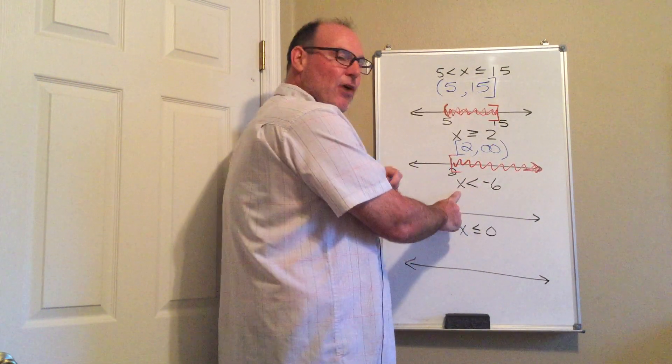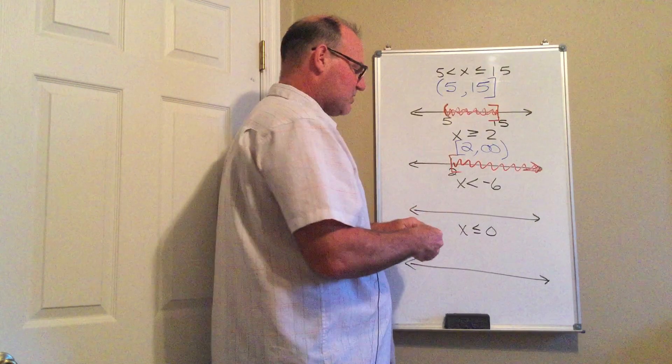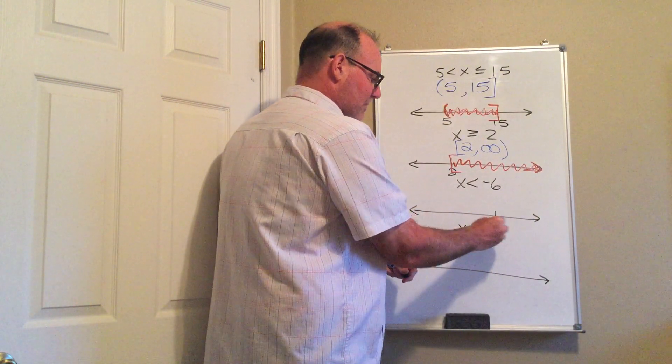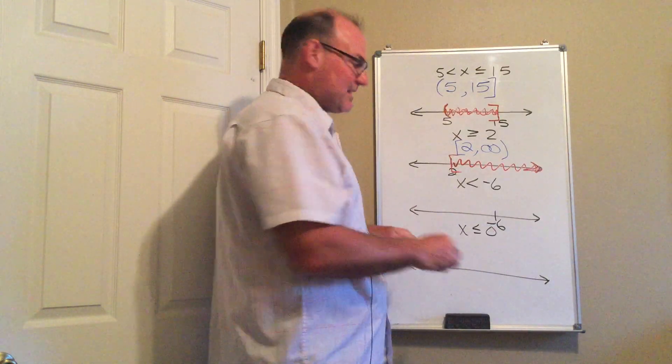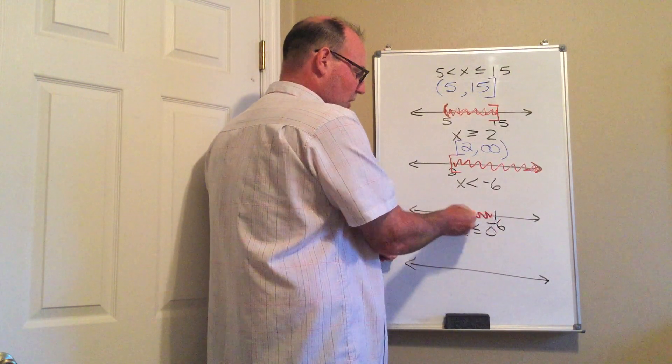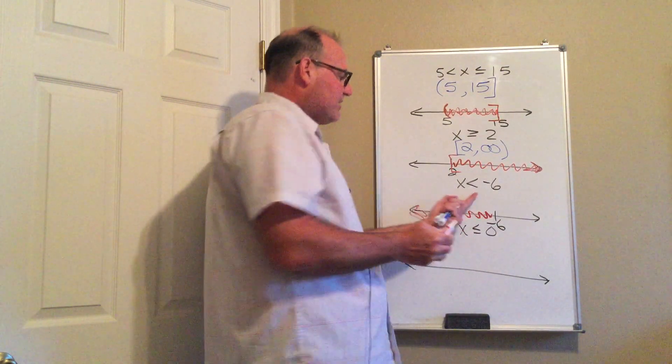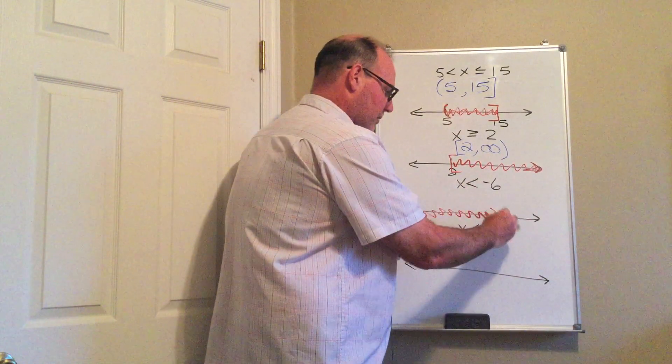Same thing is true when I have all my values less than negative 6. Once again, negative 6 is my boundary. I'm going to shade all the values that are less than negative 6, which are all these right here. I do not have an equals, so I'm going to put a parenthesis.